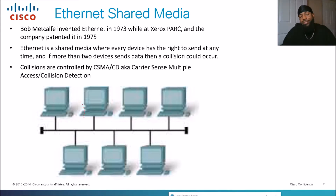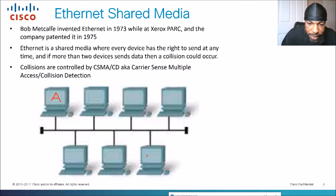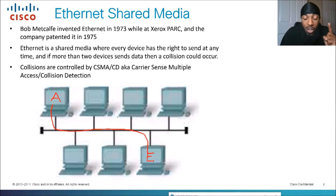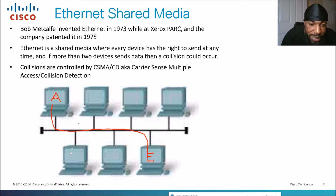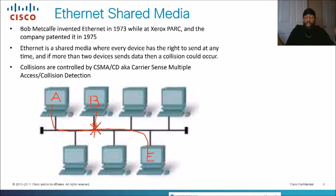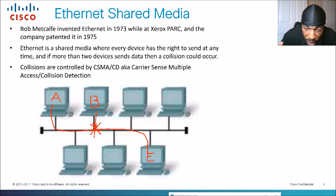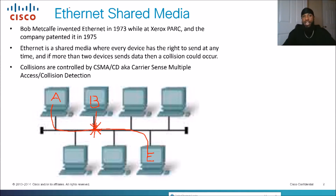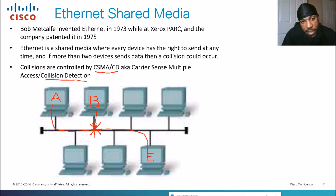What's the big deal with sharing media? Let's say computer A wants to transmit data to computer E — only one computer can talk at a time. This is called one-way communication, or half-duplex. If computer B starts sending while computer A is transmitting to computer E, we get a collision, resulting in lost frames. The collision between two frames causes lost transmission, which leads to ineffective communication on the network.